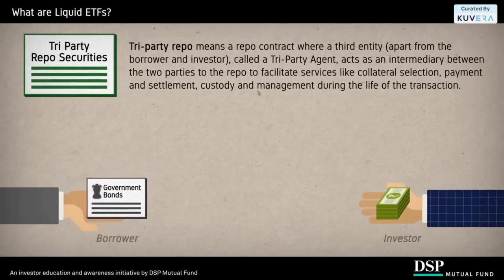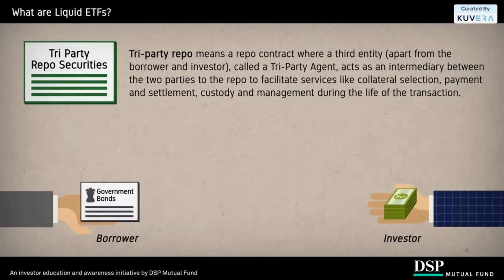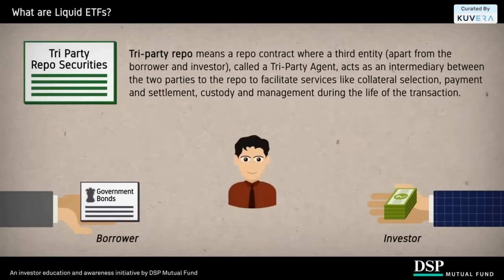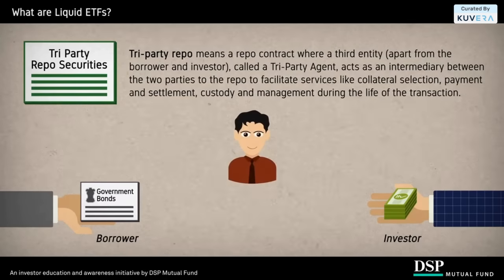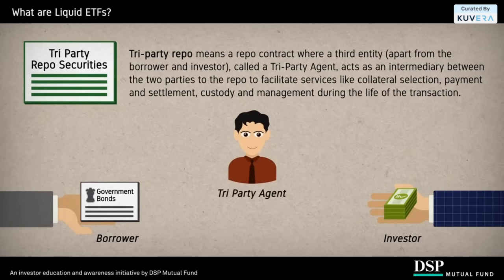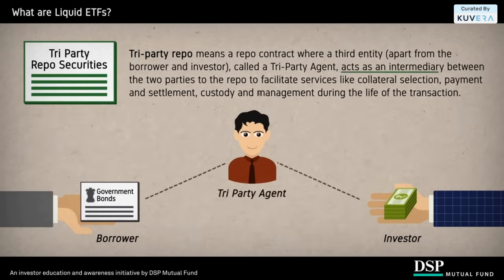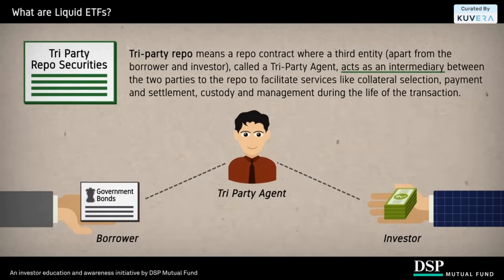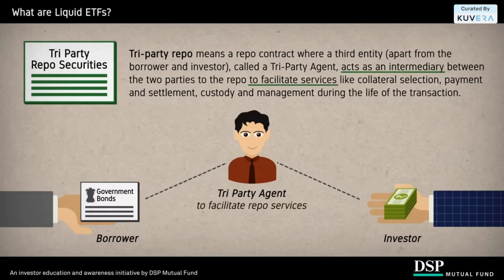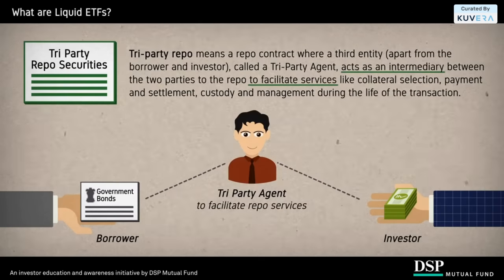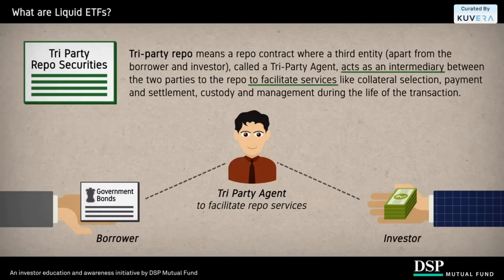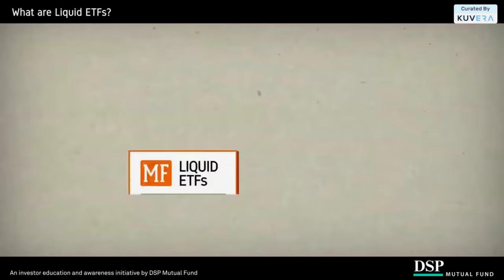Tri-party repo means a repo contract where a third entity, called a tri-party agent, acts as an intermediary between the two parties to the repo to facilitate services like collateral selection, payment and settlement, custody and management during the life of the transaction.